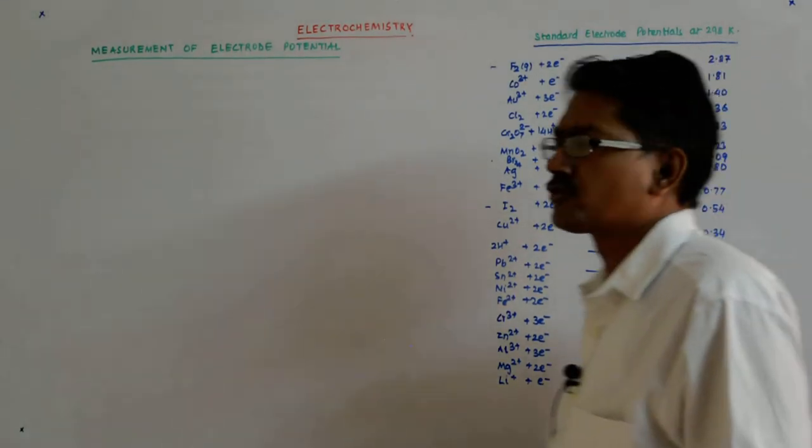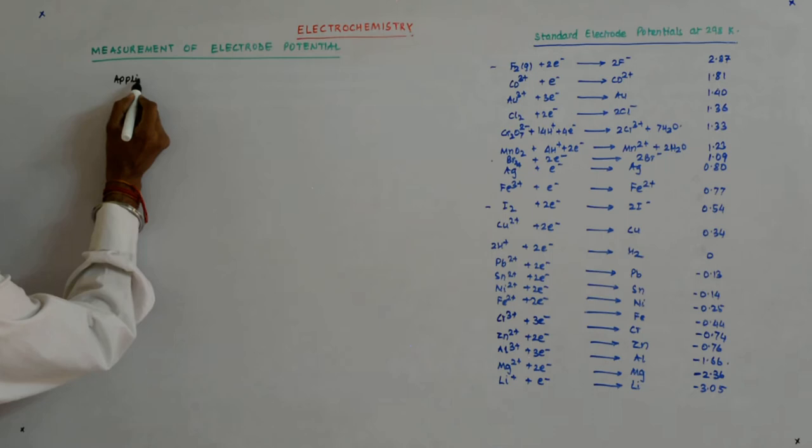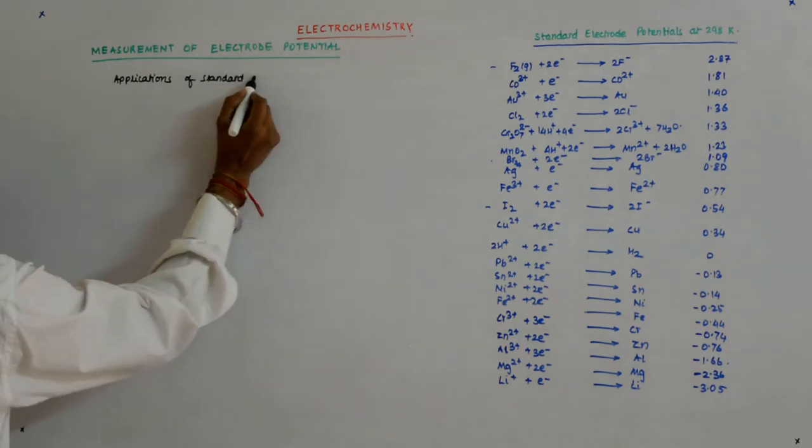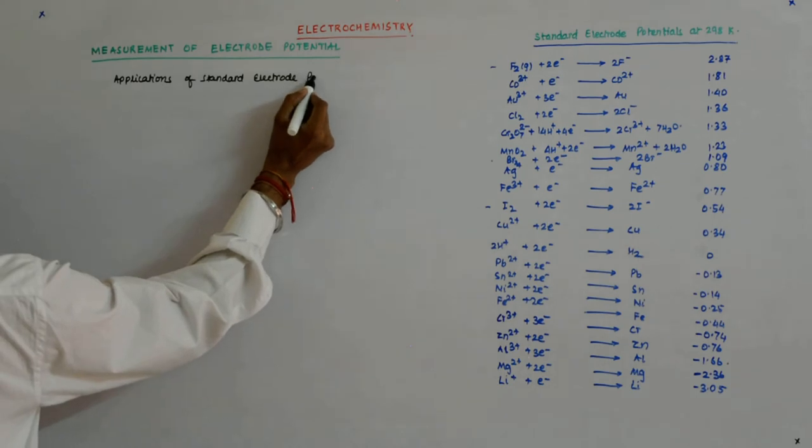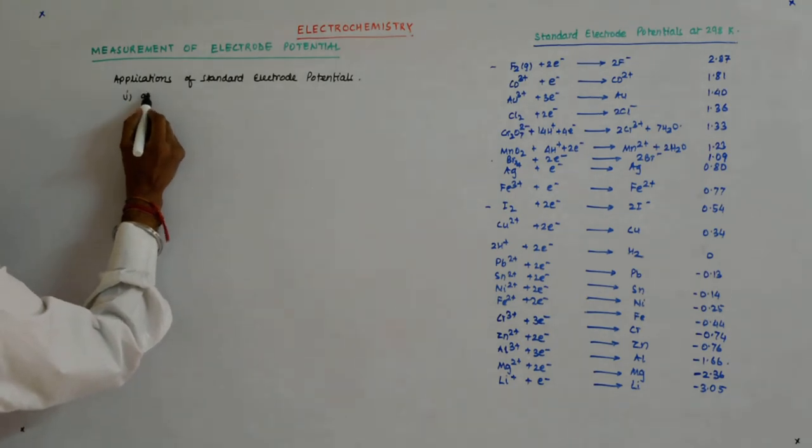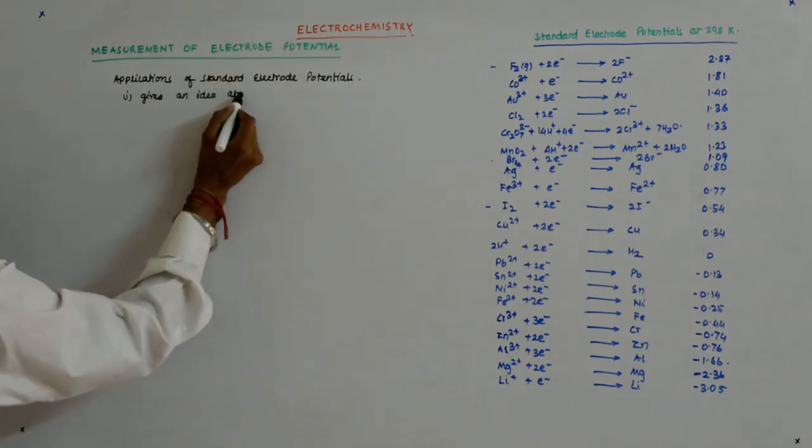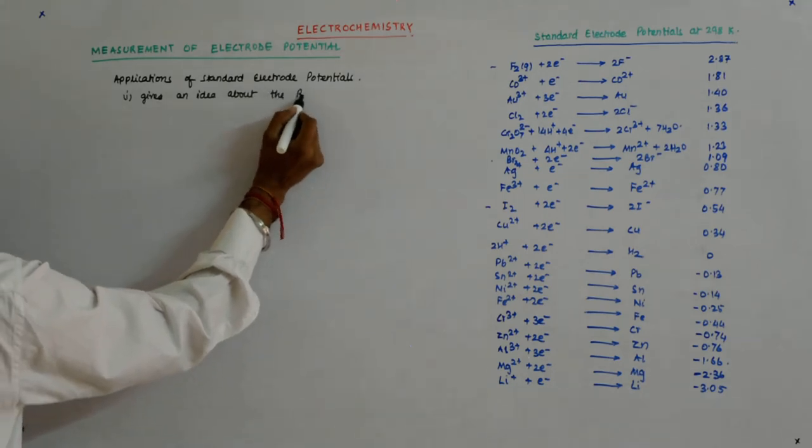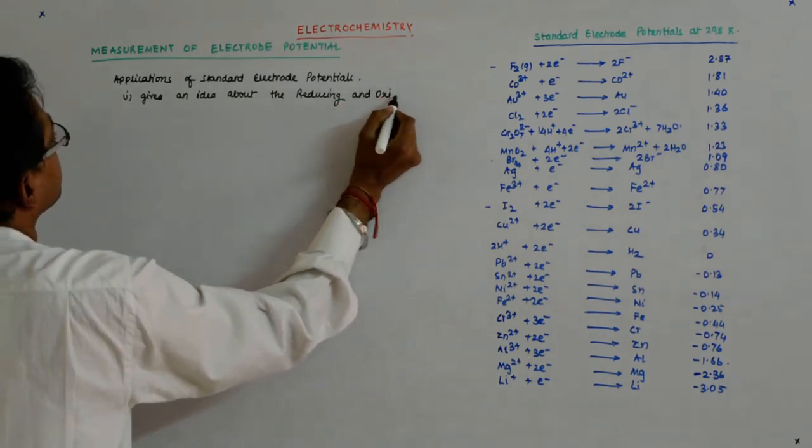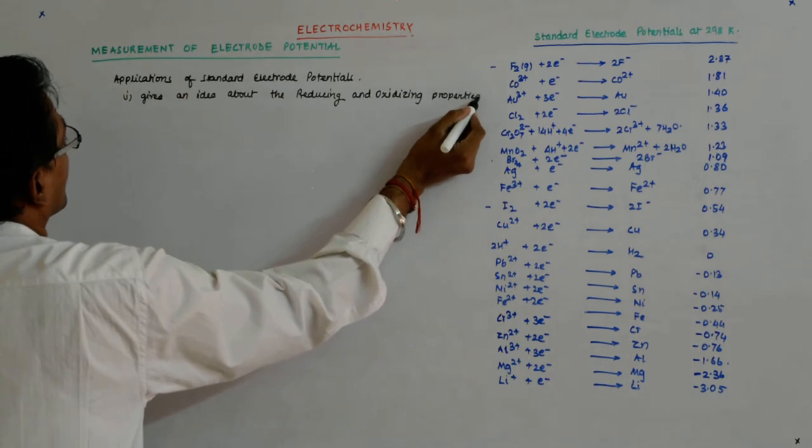If we start with applications of the standard electrode potentials, there are many applications. It gives an idea about the reducing and oxidizing properties of the species.